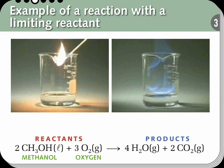What did you decide about the limiting reactant? It was pretty clearly the methanol in the beaker. After all, the amount of methanol in that beaker was perhaps 50 to 100 milliliters, whereas the oxygen in the reaction comes from the atmosphere surrounding the beaker, and that's present in an enormous amount. So the reaction products, the CO2 and the water, are controlled in their amount by the amount of methanol in the beaker and not by the amount of oxygen in the atmosphere. Methanol is the limiting reactant.